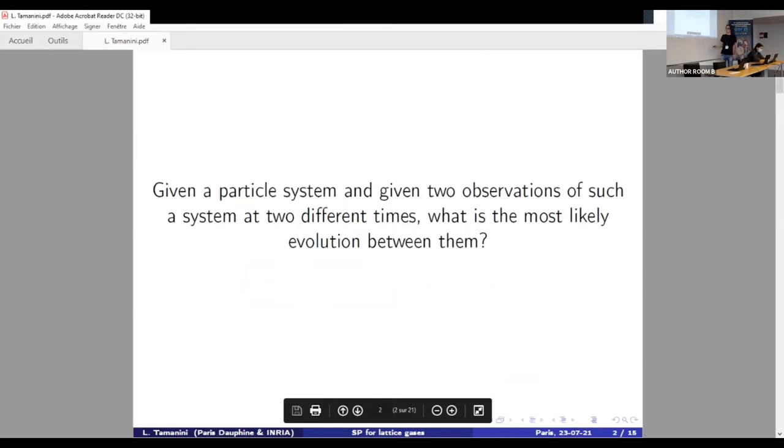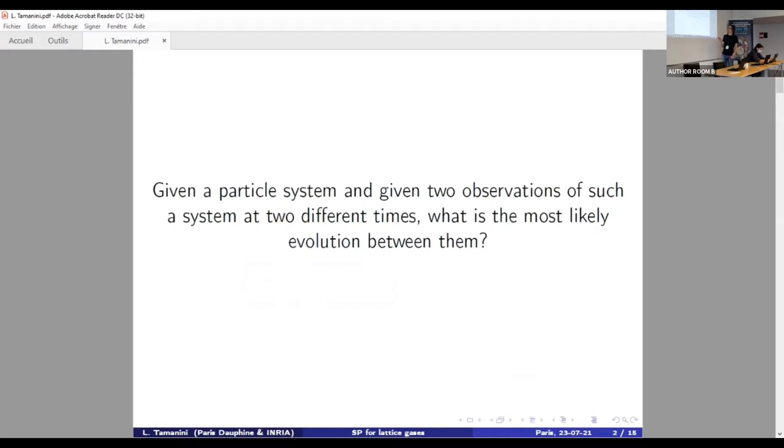So the question which is at the very heart of this talk is the following. Given a particle system and given two observations of such a system at two different times, what is the most likely evolution between them? This means that knowing the dynamic of a particle system, its initial distribution and conditionally on a possibly rare final configuration, how can we determine the most likely evolution that led from our initial configuration to the unpredicted and unexpected final one.